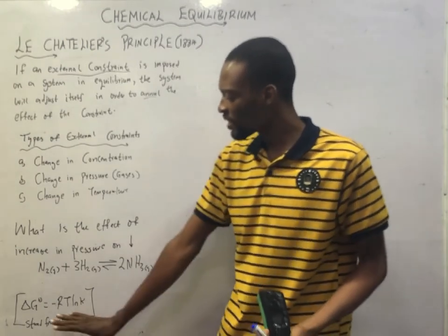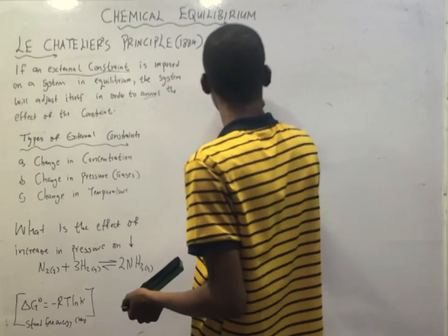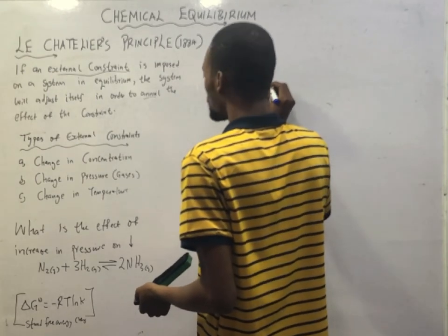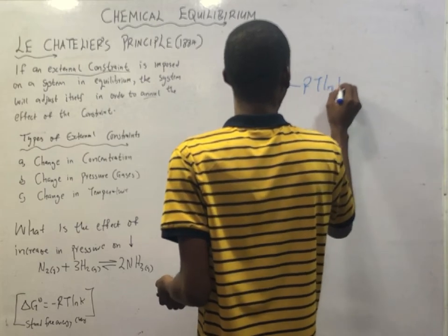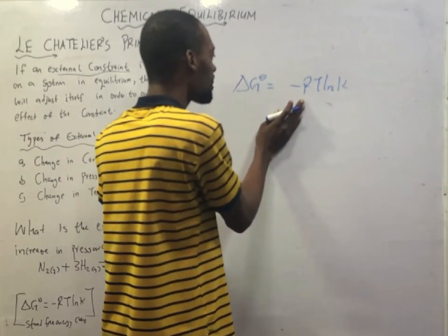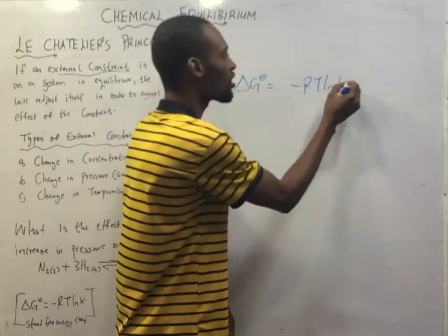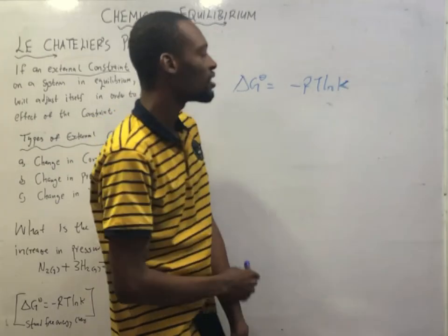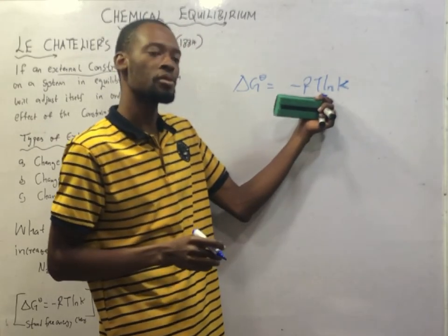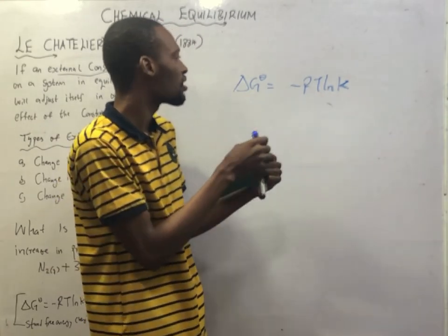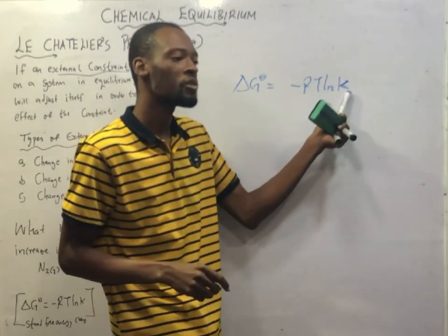The relationship between standard free energy and equilibrium constant is: ΔG° = −RT ln K, where R is the gas constant, T is the absolute temperature, and K is the equilibrium constant.